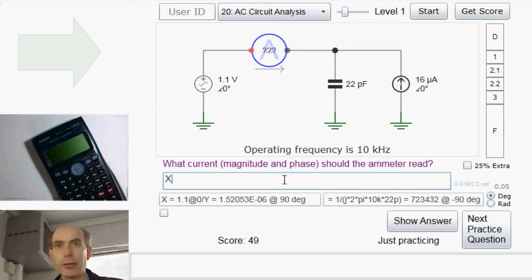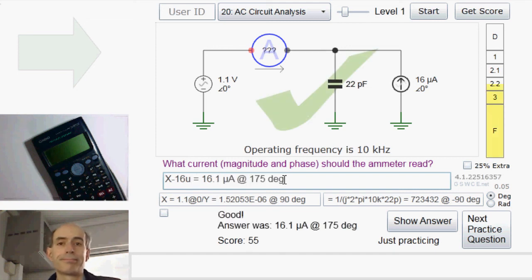So I could just write that as X minus 16 microamps at 0. Don't need to write at 0, because it's real anyway. That'll do. Again, it's nothing to be scared of. It's just using the same Ohm's law and Kirchhoff's laws that we've used many times before. We just have to remember to use them with complex numbers. Good luck.